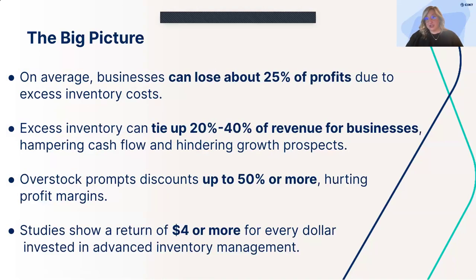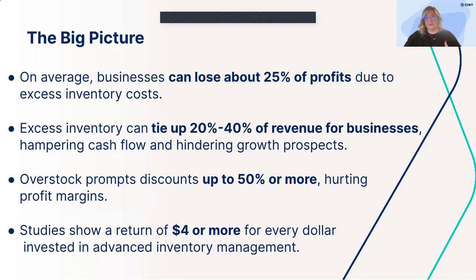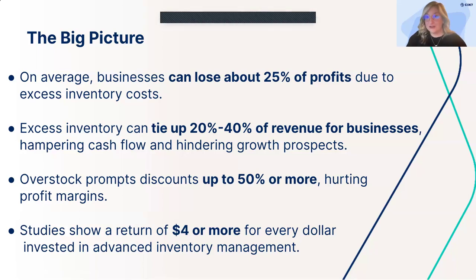We want to give you a big picture understanding of the impact of overstock. On average, businesses can lose about 25% of profits because of excess inventory costs, which is a huge number. Inventory or excess inventory can be tied up between 20 and 40% of your business's revenue. Overstock prompts up to 50% or more in discounts, which really affects your profit margins. Studies show a return of $4 or more for every dollar invested in an advanced inventory management system.